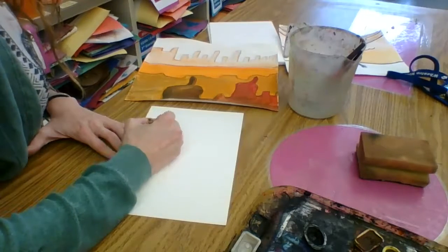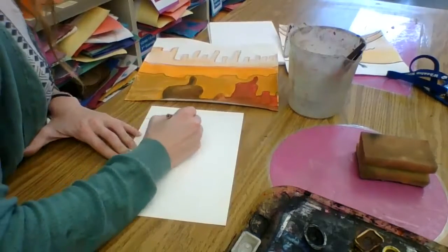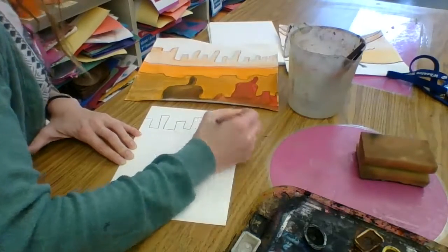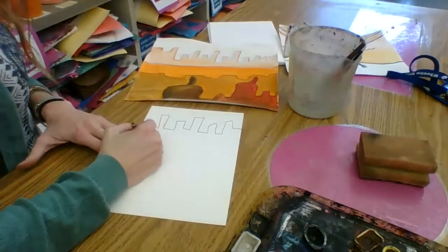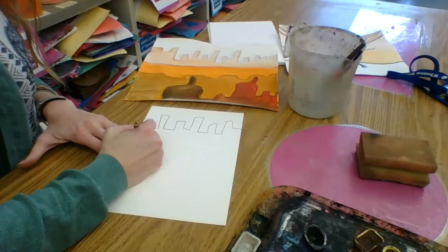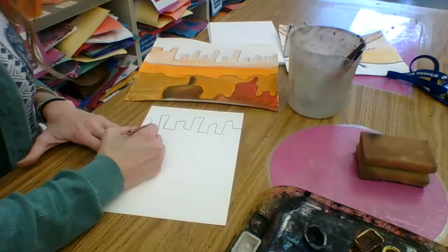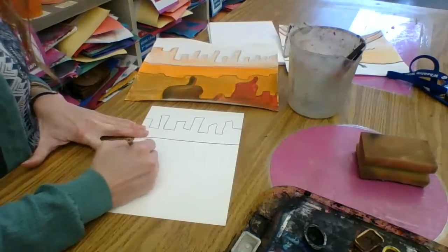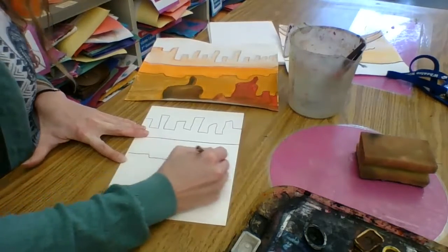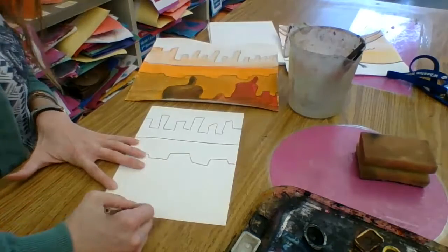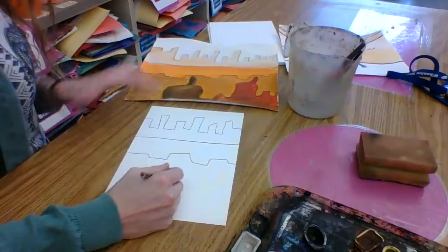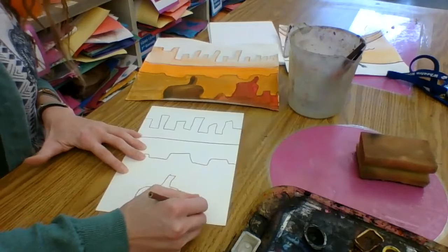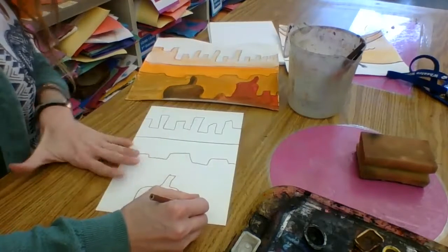Remember, you could have done a cityscape, a landscape with more hills and plains, a mountainscape, a cityscape, a landscape, or a mountainscape. Some of you even chose to do seascapes. As long as you have these four lines to divide up your space to create space, we're good to go to start.